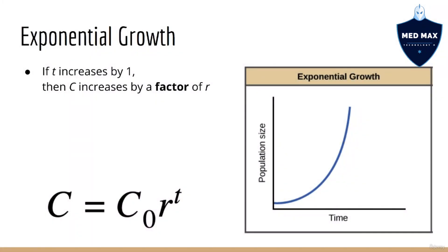We can write the generic equation for exponential growth as c equals c0 times r to the power t. Here, c is the output variable, and that's the thing we're counting. c0 is the initial value when t equals 0. t is the input variable, which in our case represents time, and finally r is the rate of growth.